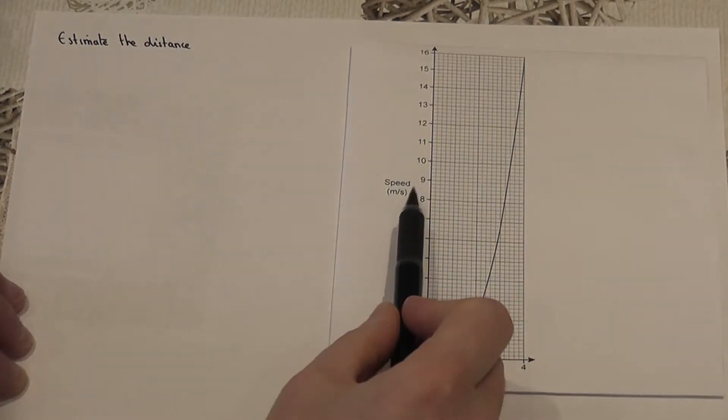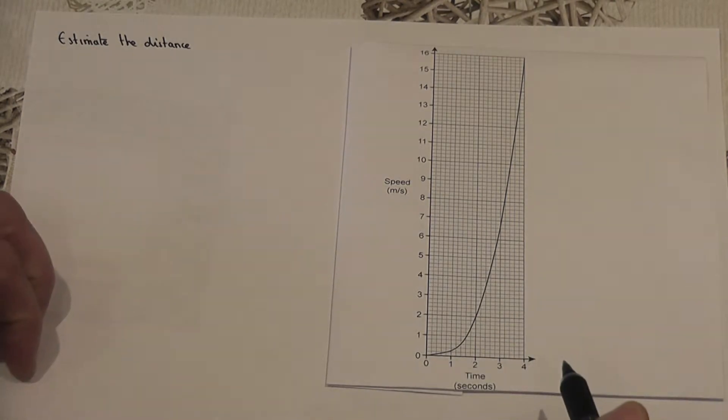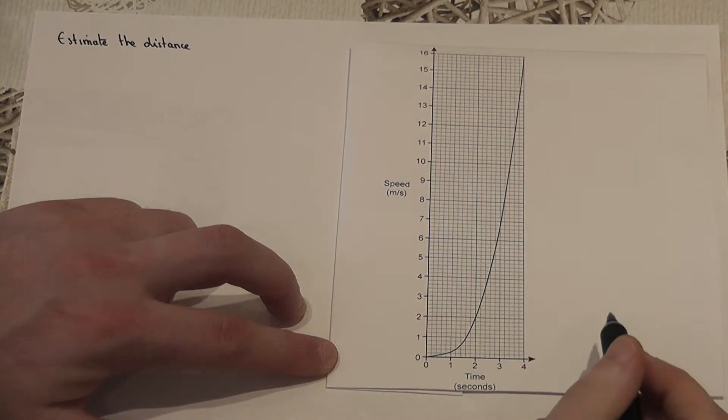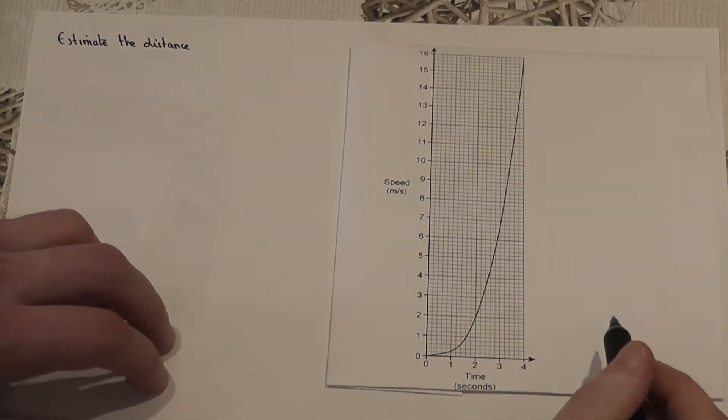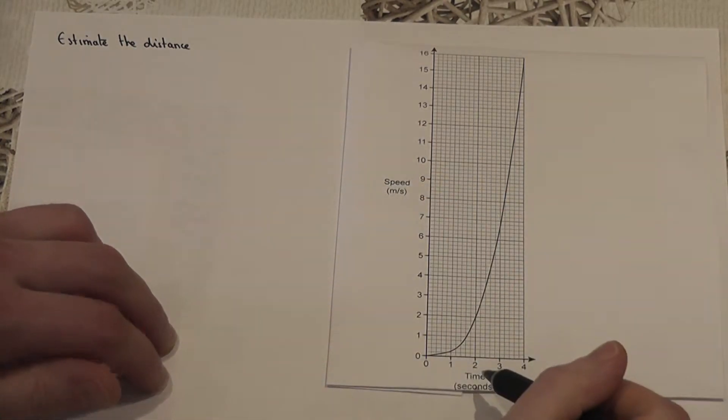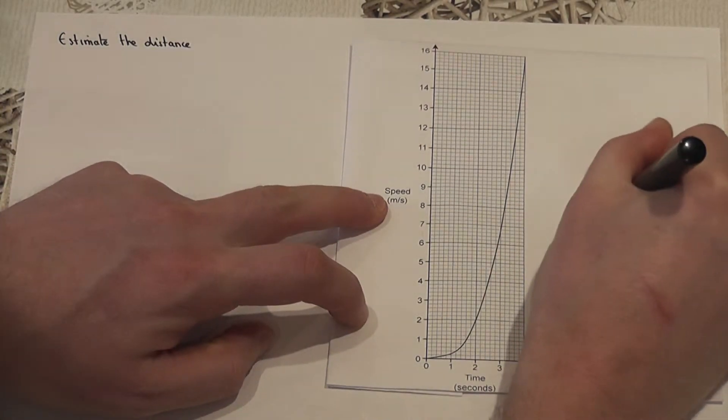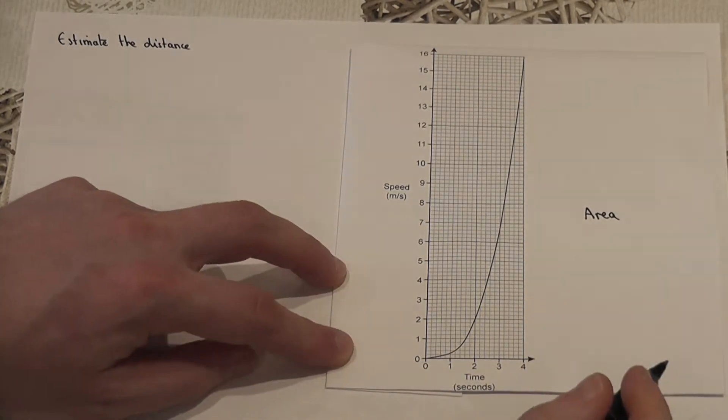This video reviews finding distance from a speed-time graph. When you have a curve and you're asked to estimate the distance given a speed-time graph, to find the distance we have to find the area underneath the graph.